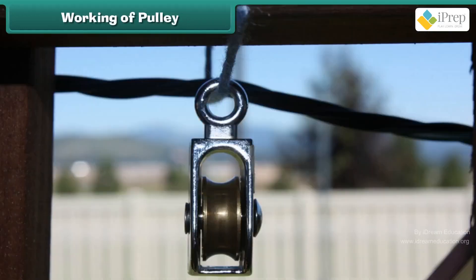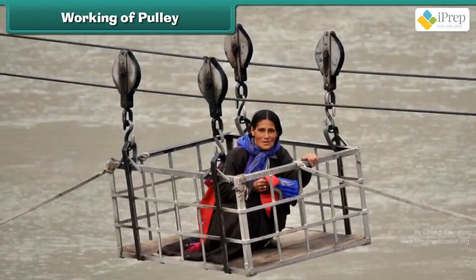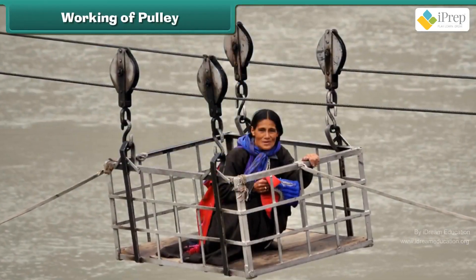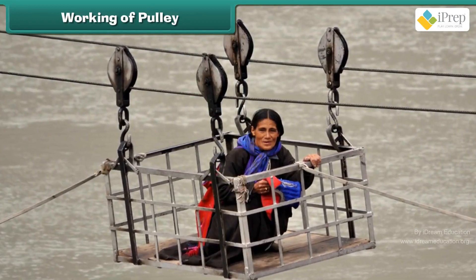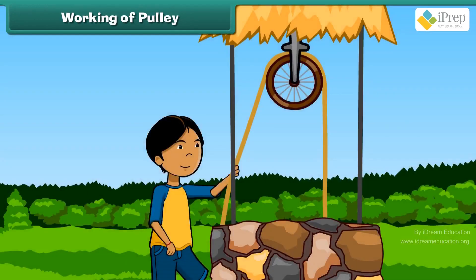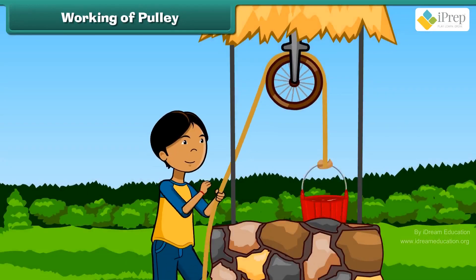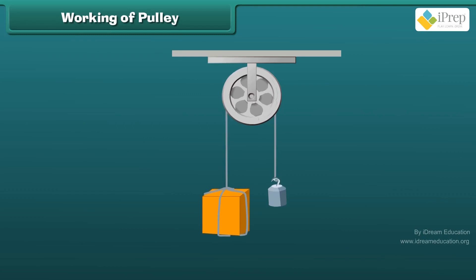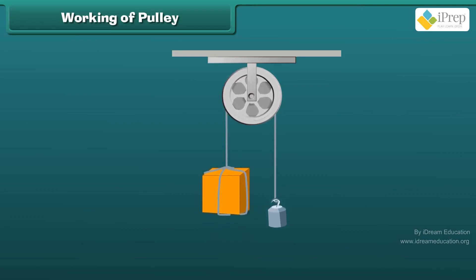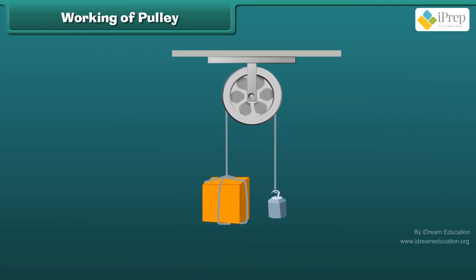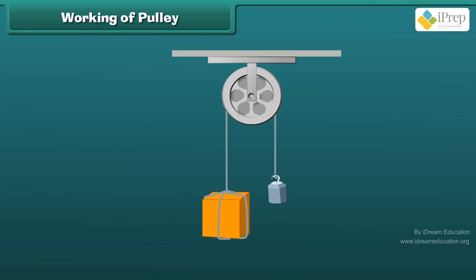A pulley helps the trolley to cross a river. A pulley is also used to lift heavy loads. With a pulley, an object to be lifted can be tied to one end of the rope and a force is applied to the other end.